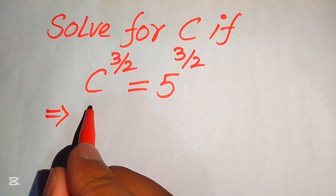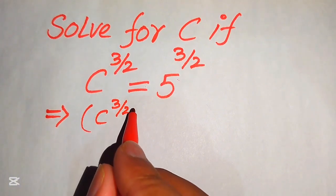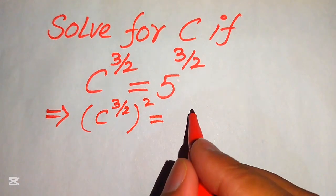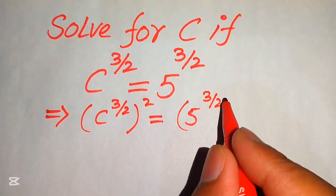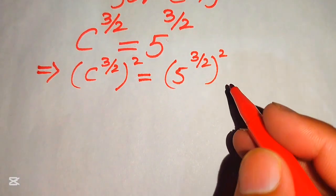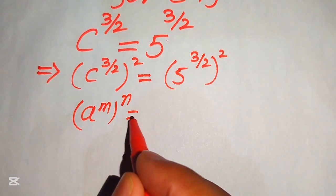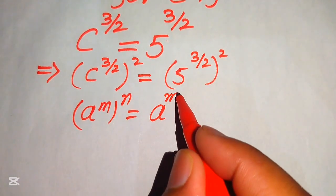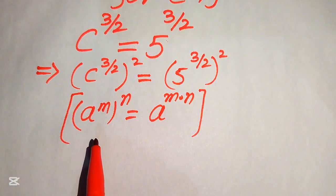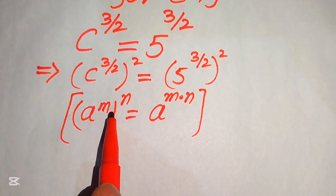Now we move to taking the squaring on both of the sides, and it will be written as: c to the power of 3 over 2, its whole square, equals to 5 to the power of 3 over 2, its whole square. And now here we use the exponent law — you know this law: if we have a to the power of m to the power of n, it equals to a to the power of m multiplied by n. So if you have an exponent to an exponent, these two exponents are multiplied by each other.